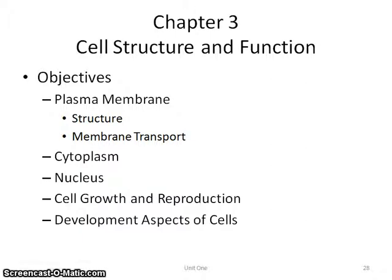Chapter 3 is all about the cell structure and how it works. Things we'll cover in this chapter are the plasma membrane, which is the outside of the cell and holds everything in; the cytoplasm, which is the inside; the nucleus, which is kind of the brain of the cell; and all the little pieces within it. If we have time, we'll touch on the growth and reproduction of cells as well.